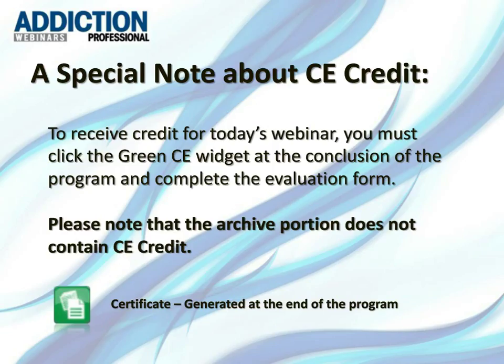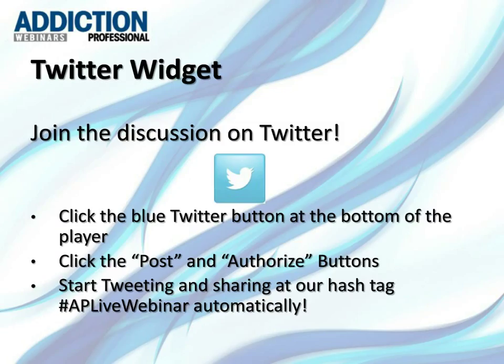A special note about CE credit: to receive credit for today's program, you must click on the green CE certificate widget at the conclusion of the program and complete the evaluation form. If you're watching in a group, please download the group submission guide and program evaluation form from today's resources list. Please note CE credit is not available for the archived webinar — it is only available for the live event. You can also tweet during today's webinar using the hashtag APLiveWebinar.